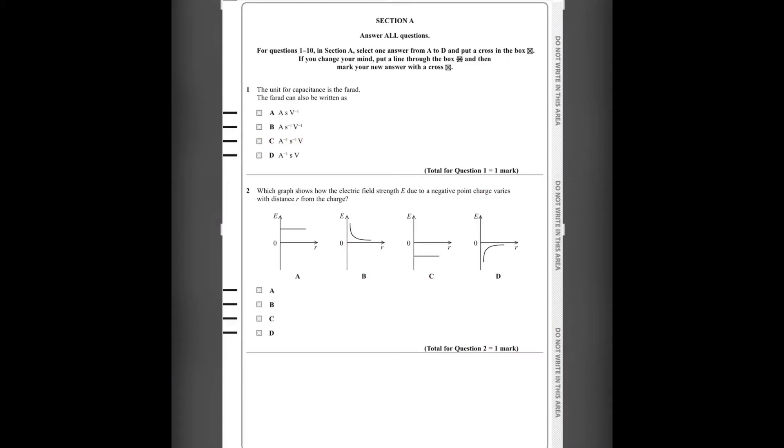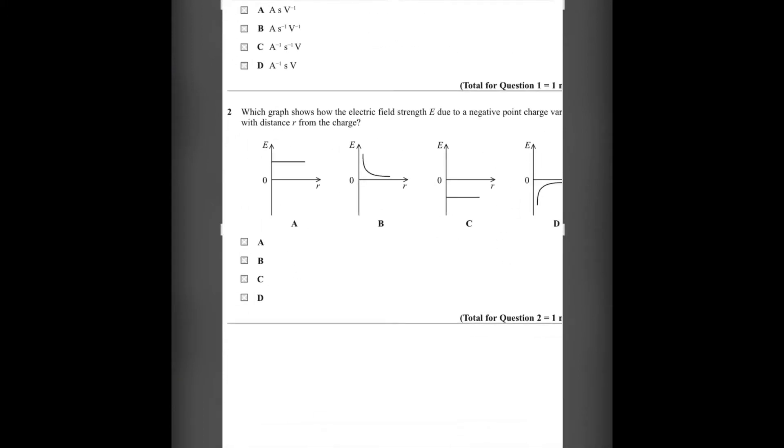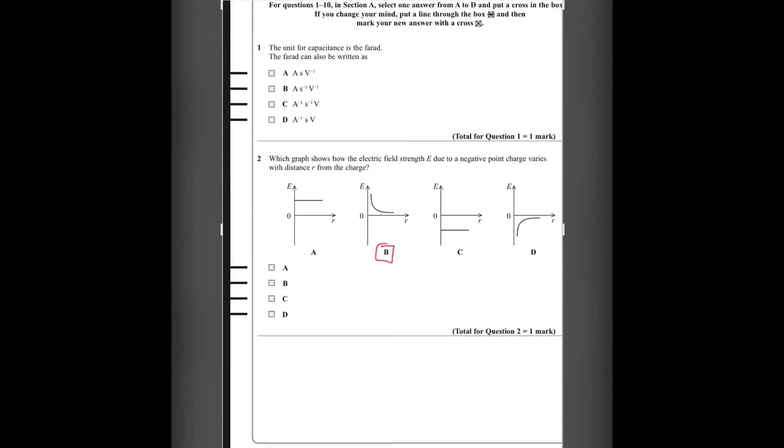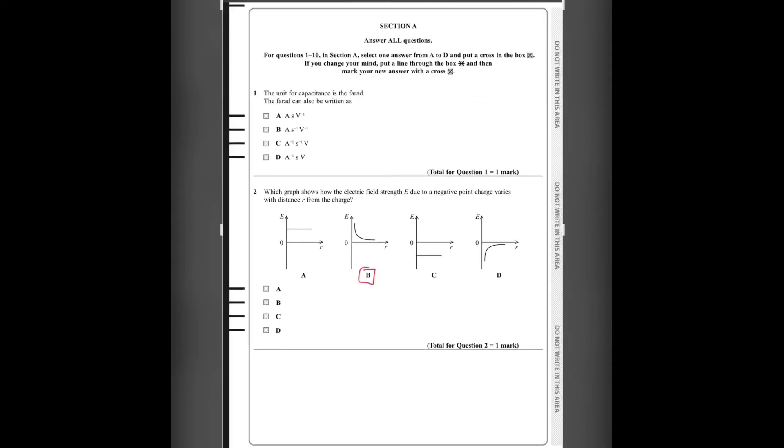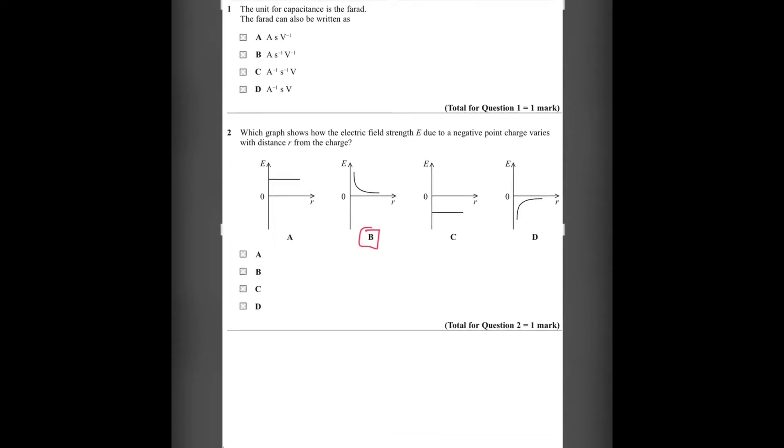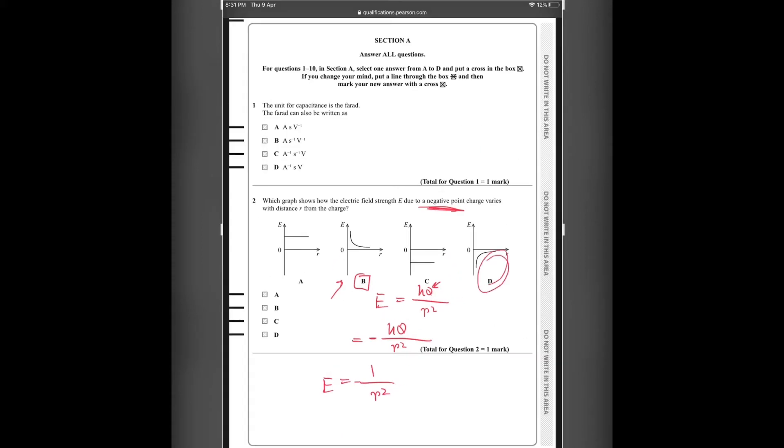Number 2. Which graph shows how the electric field strength E, due to a negative point charge, varies with distance R from the charge? The most probable answer would be B, since E is inversely proportional to R square. But this is not the answer since it says this is a negative point charge. This would have been the answer if it was E equals KQ by R square, but this Q is negative. For a negative charge, this would be minus KQ by R square. A graph for E equals minus 1 by R square would be D. So the answer is D.